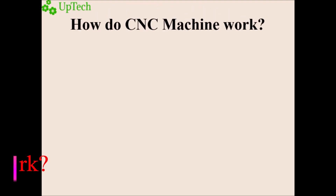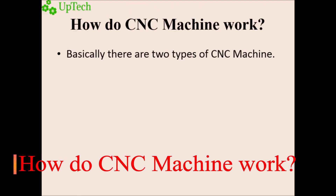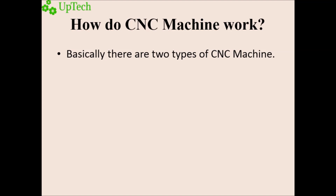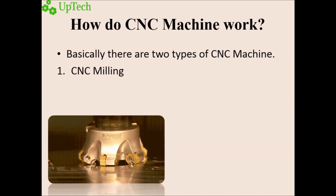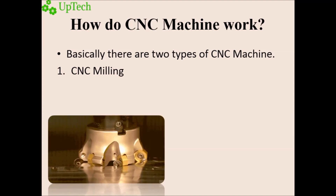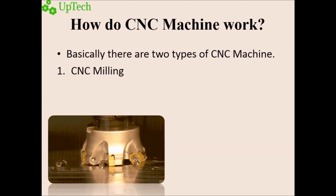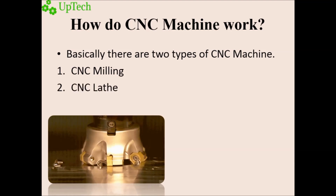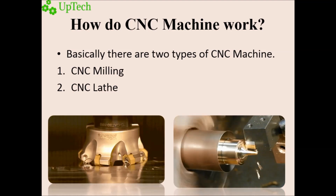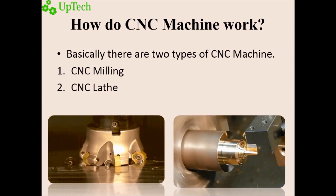How do CNC machines work? Let us focus on the subtractive process. There are two basic types of CNC machine. CNC milling — in this type of machining process, a high-speed rotary cutting tool is used to remove material from the workpiece. CNC lathe — a single-point cutting tool is fed into the rotating workpiece for removal of material.